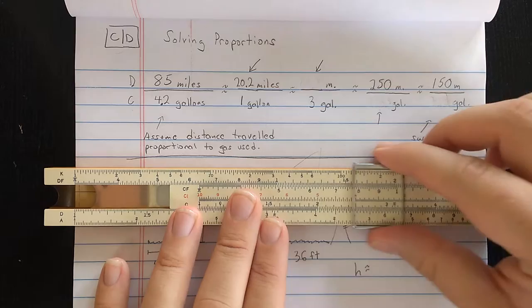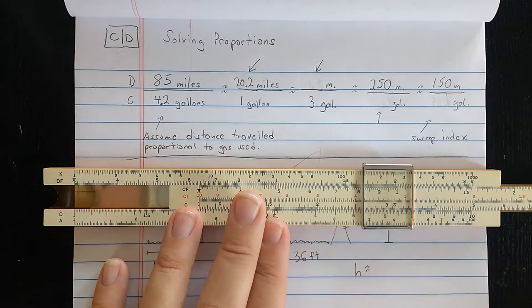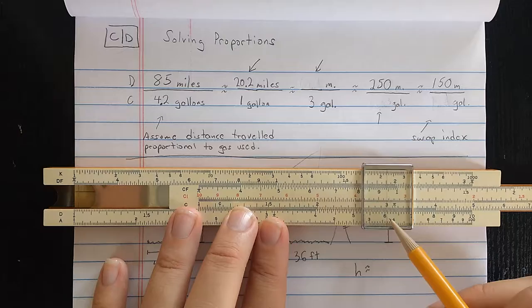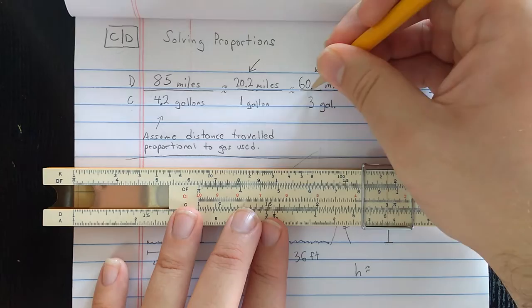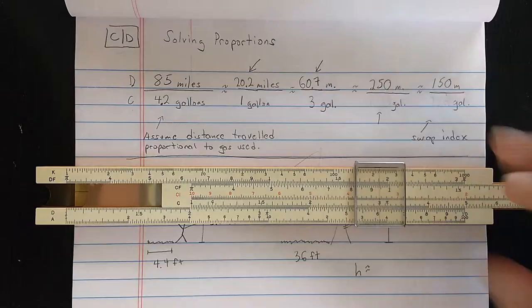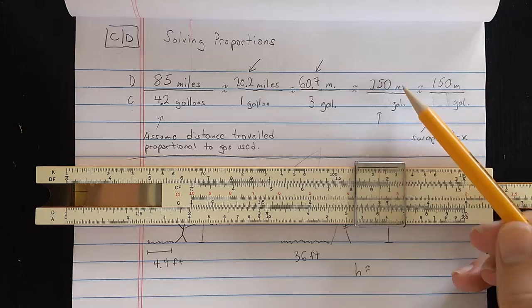But if instead I want to see how far I can go on 3 gallons, then I simply find the 3 on the C scale. It looks like about 60... this is 61. So not quite 61, but maybe 60.7. That last digit is often a guess on your slide rule. So these are all approximations.